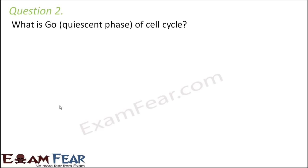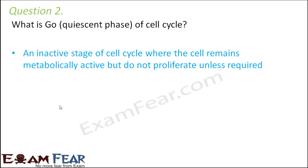Question number 2: What is G0 of the cell cycle, also known as the quiescent phase? It is an inactive stage of the cell cycle where the cell remains metabolically active but does not proliferate unless required. Some cells do not need to divide all the time — they divide only when required, such as when other cells are damaged or dead and need replacement. Such cells enter a G0 stage where they are inactive but still metabolically capable.